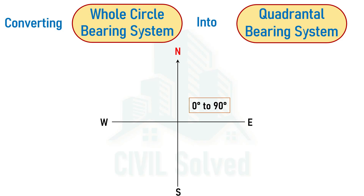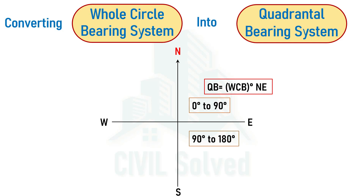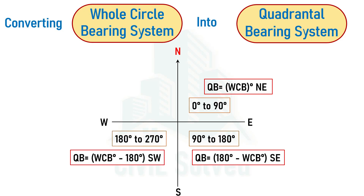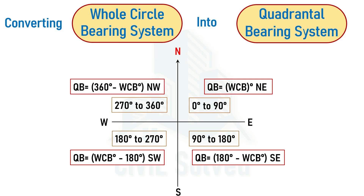To summarize the generalized equations for every quadrant: when WCB is from 0° to 90°, QB = WCB (written with NE); when WCB is from 90° to 180°, QB = 180° − WCB (written with SE); when WCB is from 180° to 270°, QB = WCB − 180° (written with SW); and when WCB is from 270° to 360°, QB = 360° − WCB (written with NW). This covers the full conversion from whole circle bearing to quadrantal bearing system.